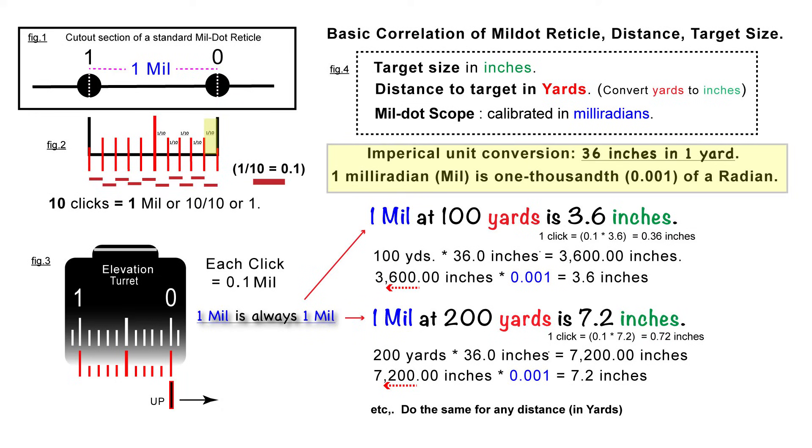And then you can do the same thing for 200 yards. But look at that. You want to make sure that you're not going like one mil at 200 yards, two mil at 200 yards. A mil is always a mil, no matter what. So you're always going to use one mil at 100 yards, one mil at 200, one mil at 300, and so forth.